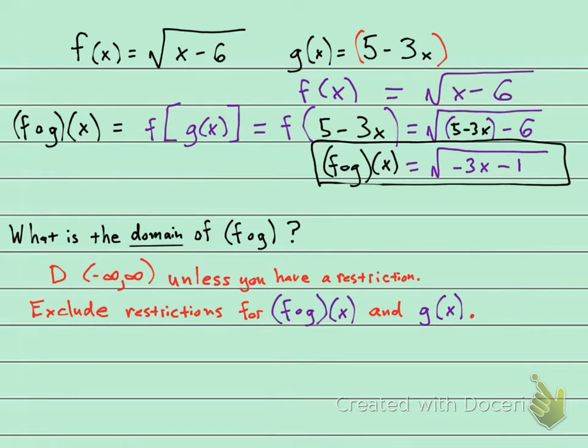Now we need to look at our composite function right here, the f of g of x. Well, I do have a radical, the square root of negative 3x minus 1, and there's a restriction that comes with that. Remember that I cannot have a negative under a radical, so whatever is inside that radical, the radicand, it has to be greater than or equal to zero. So in this case I need to take negative 3x minus 1 and set it greater than or equal to zero.